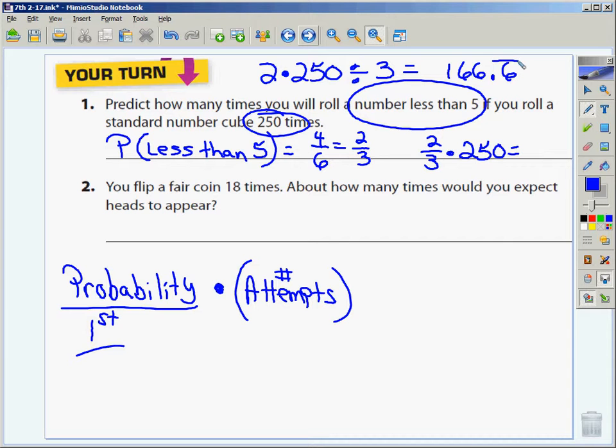Now let me ask you a question. If I'm rolling a die, am I going to get a hundred and sixty-six point six as an outcome? No. So what would I round this to? A hundred and sixty-seven. If I roll it two hundred and fifty times, I can predict that a hundred and sixty-seven times I'm going to get a number that's less than five.